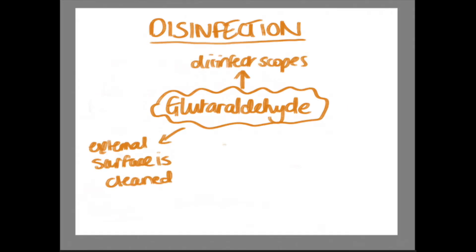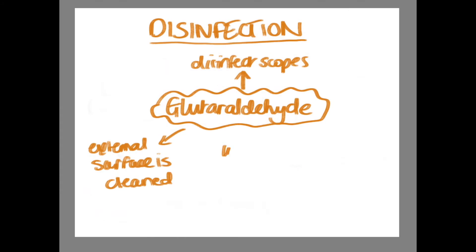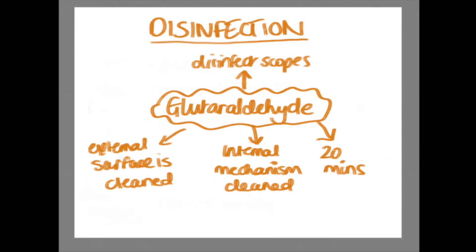Generally, the external surface is cleaned and visible debris are removed. The internal mechanism is flushed with detergent and the endoscope is exposed to glutaraldehyde. The minimum exposure time is around 20 minutes, followed by rinsing of the glutaraldehyde.